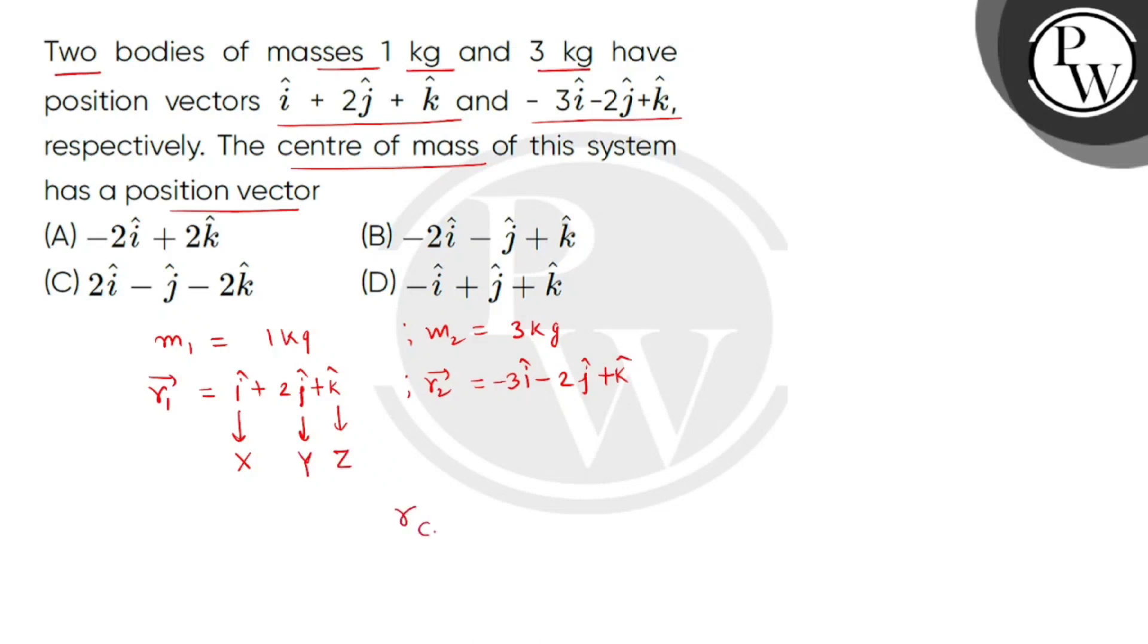And we find the position vector of the center of mass. So we can express this as m1 r1 vector plus m2 r2 vector whole divided by m1 plus m2.